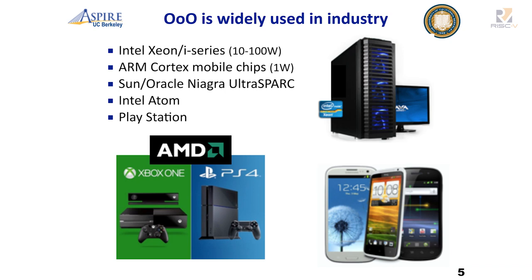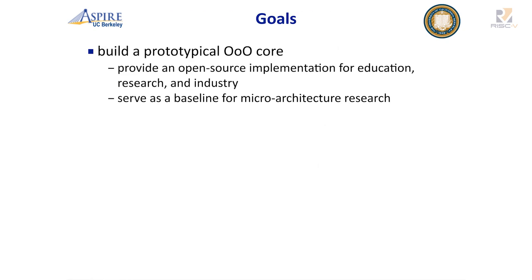So I figured if everyone else does it, I should probably build one too. My goal here as a researcher was: let's build a prototypical out-of-order core, provide this as open source to help in education, research, and industry, and use this as a baseline for microarchitecture research. If you have an idea for a better issue window or load-store queue, you don't have to build the whole processor — you can just pull out BOOM and make the change you want. Or if you have some idea that's better than out-of-order, you can use BOOM as your control experiment.